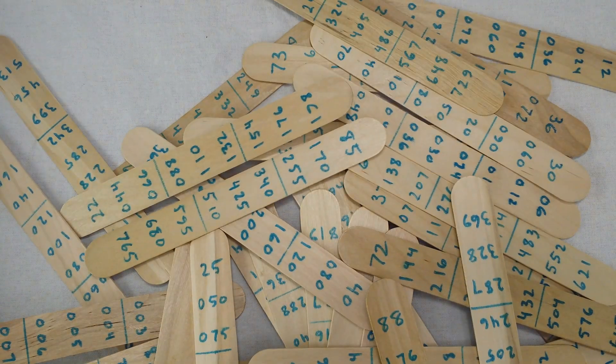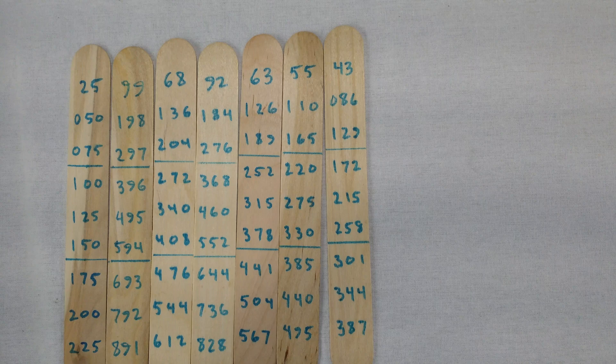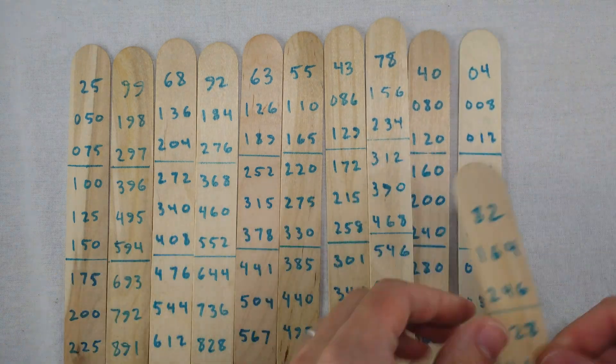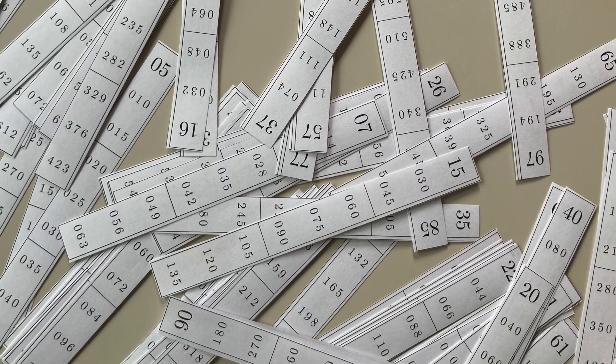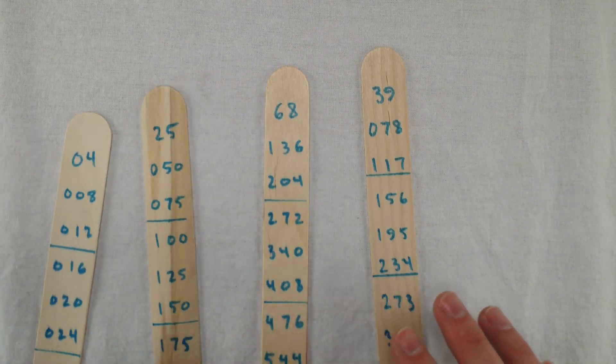Each rod is a column of a multiplication table for all the numbers from 0 up to 99. You can use them to multiply a big number by a single digit. Find the link down there and print out some for yourself if you want. You line up the sticks just right and read across to get the answer.